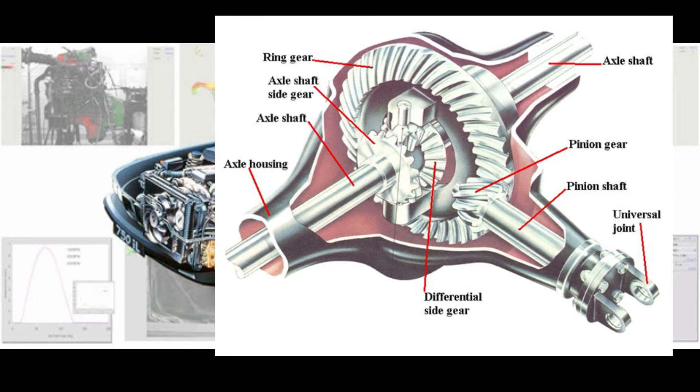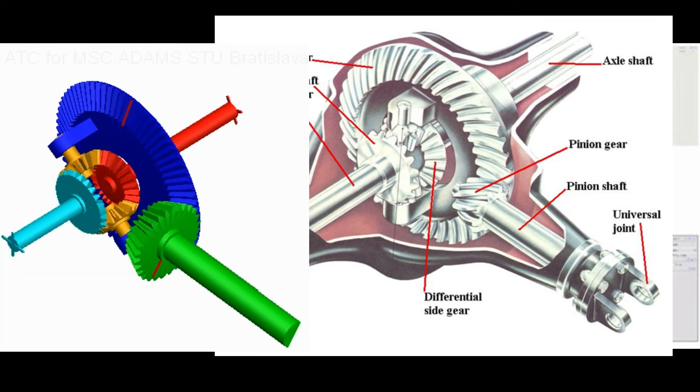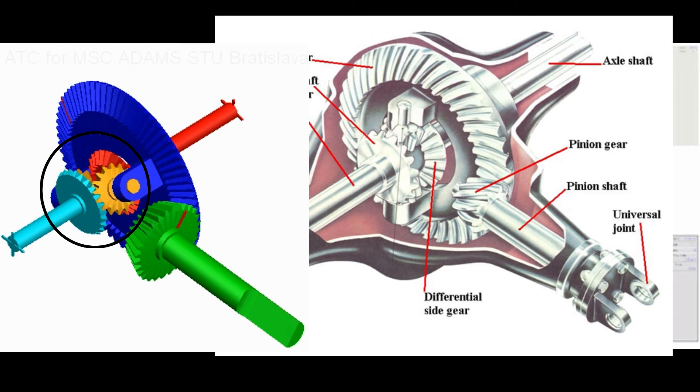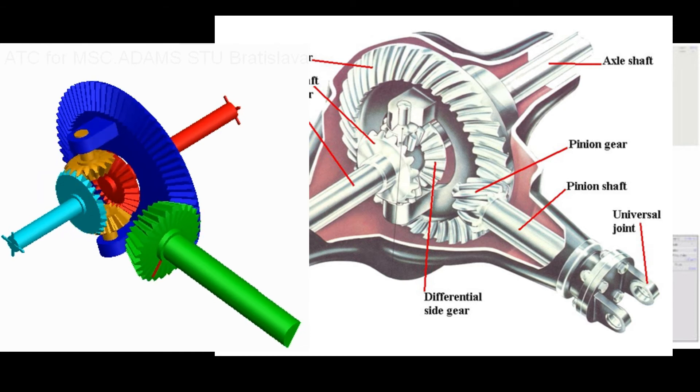The bevel gears are in contact with the half shaft of the rear axle. When the crown wheel is rotating, it rotates the differential unit. The bevel sun gears of the differential rotate the two shafts.